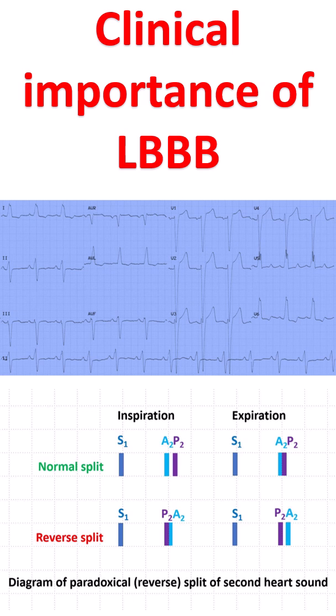Secondary ST segment and T wave abnormalities, common with LBBB, make assessment of myocardial ischemia difficult both at rest and during exercise testing. Various criteria have been proposed for diagnosis of myocardial infarction in the presence of LBBB, of which the Sgarbossa criteria is most popular.